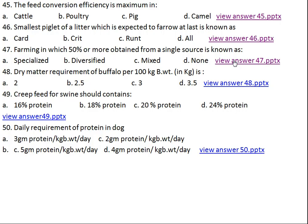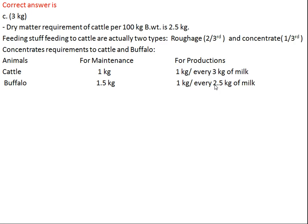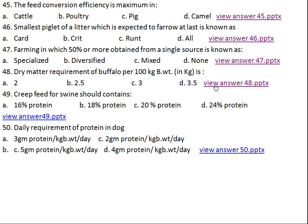Question number forty-eight: dry matter requirement of cattle and buffalo. The ratio of concentrate to roughage for cattle is two-thirds concentrate and one-third roughage, or two-thirds roughage. For every 3 kg of milk produced by cattle, 1 kg of concentrate extra should be fed. In case of buffalo, 1.5 kg for maintenance and for every 2.5 kg of milk, 1 kg of concentrate is fed extra.